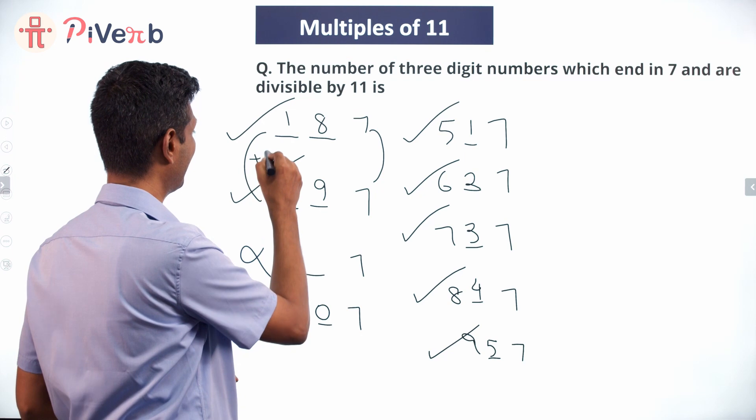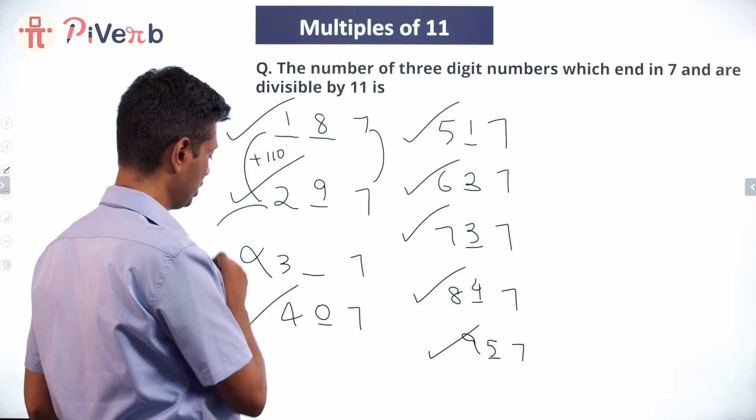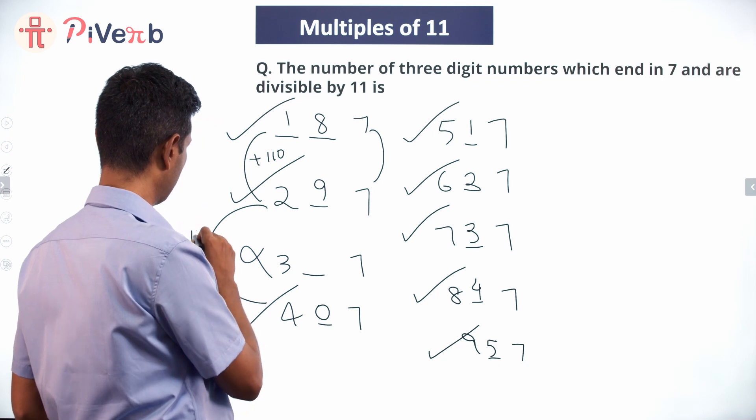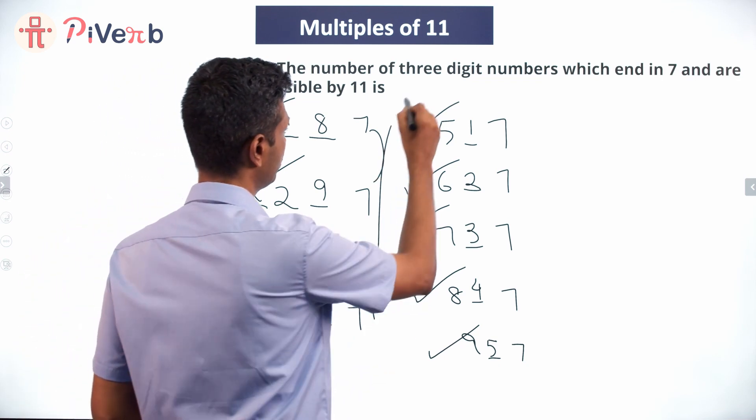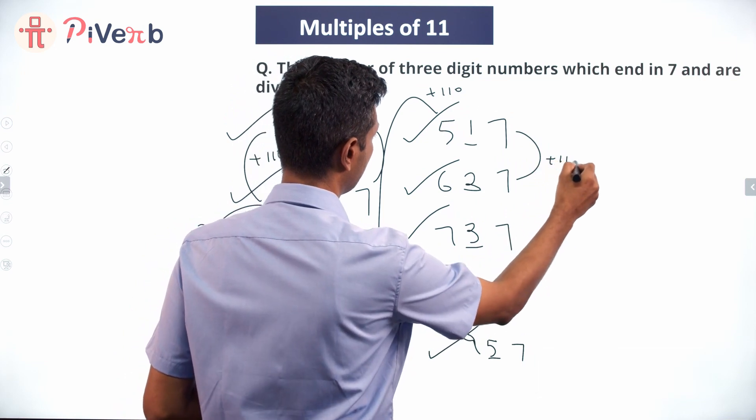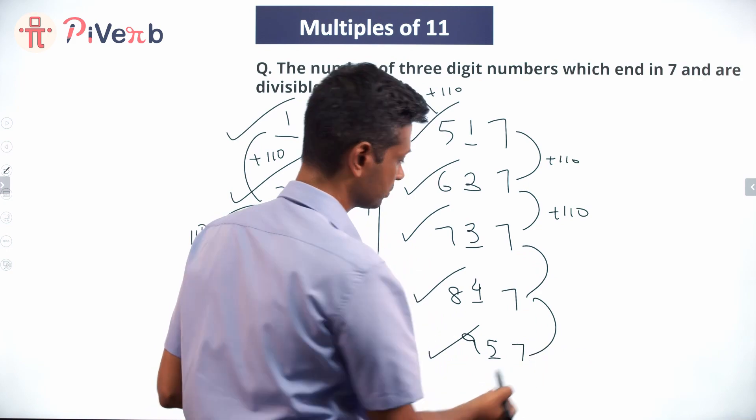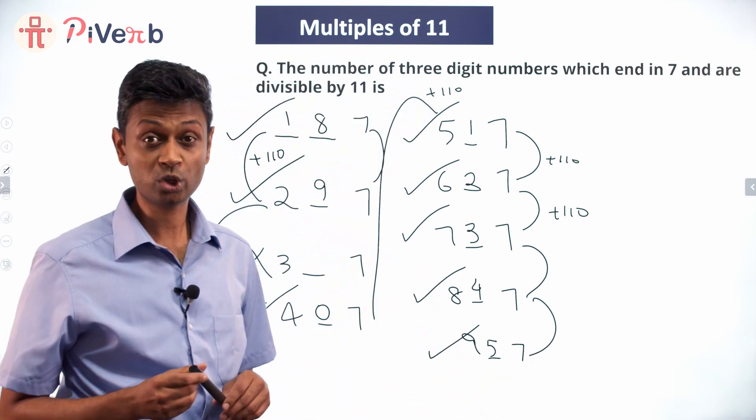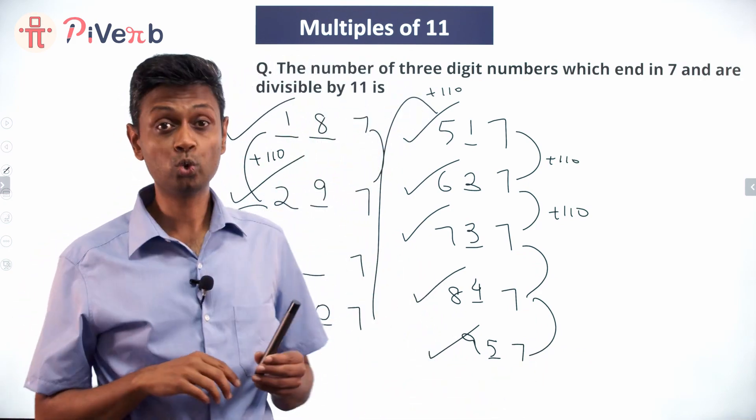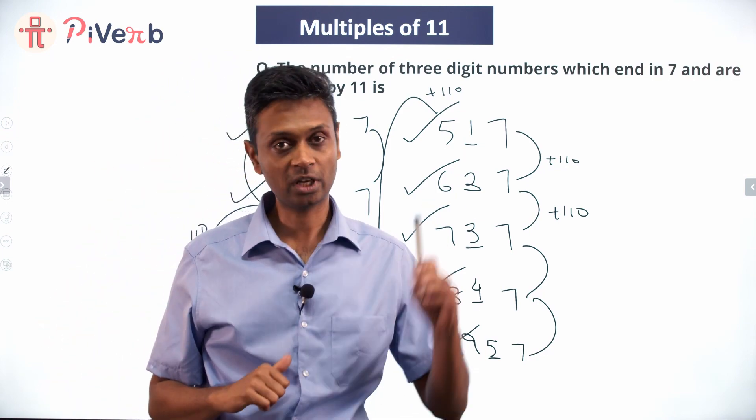From here to here you add 110, multiple of 10 and 11. From here to here you add 110, from here to here you add 110, plus 110, plus 110. And you can count how many are there. From 297 you add 110, you go directly to 407. There is nothing in the 300s that works for us.